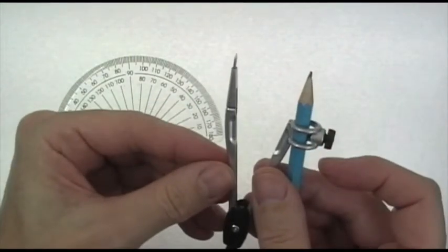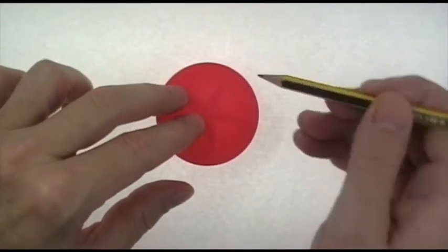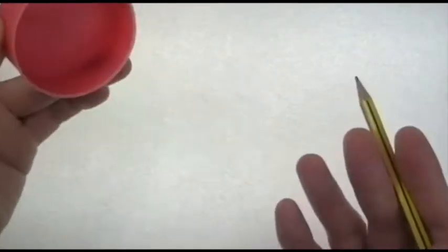It is possible to draw around a circular object, but once you've drawn the circle you need to find the center, and it's going to be pretty hard to find it.